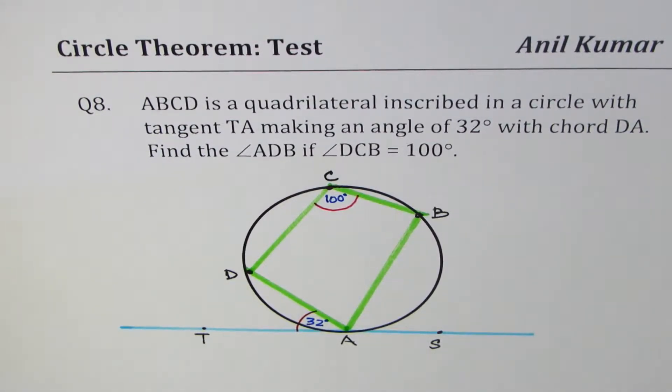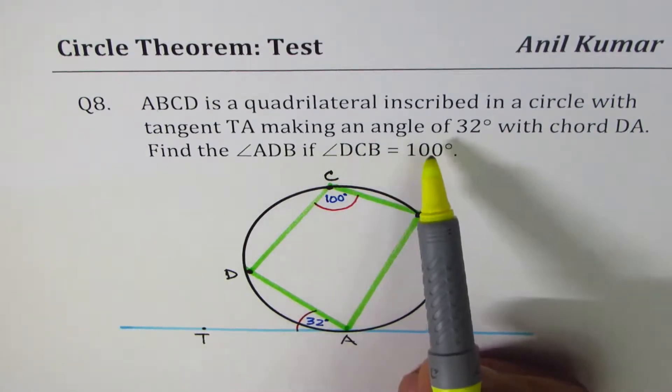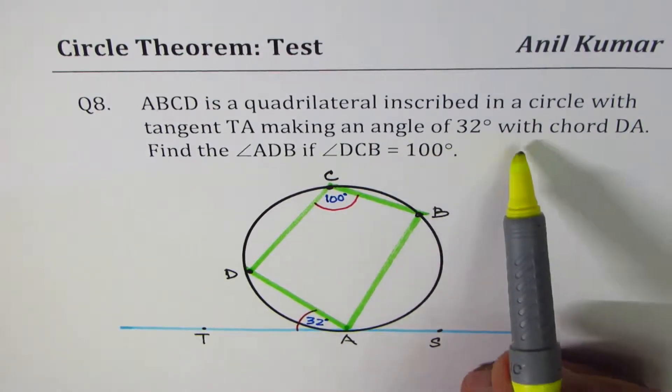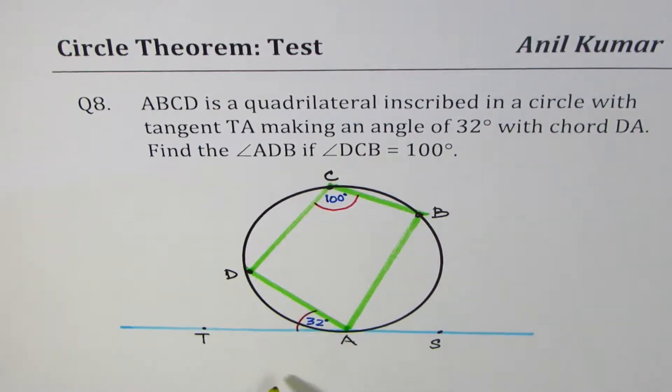I'm Anil Kumar and here is question number eight, a test question based on circle theorem. ABCD is a quadrilateral inscribed in a circle with tangent TA making an angle of 32 degrees with chord DA. That's 32 degrees.